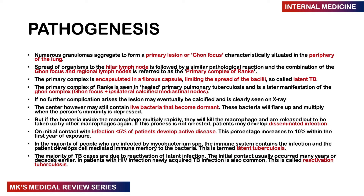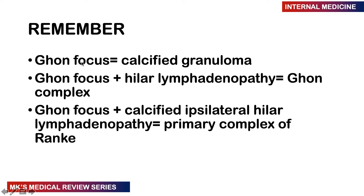On initial contact, less than 5% of patients develop active disease, rising to 10% within the first year of exposure. The infection then remains dormant as latent TB and may reactivate later in life. To clarify the terms: a Ghon focus is a calcified granuloma. A Ghon focus plus ipsilateral calcified hilar lymphadenopathy is the primary complex of Ranke. A Ghon complex refers to the calcified primary complex.